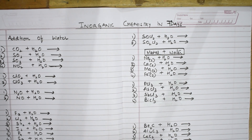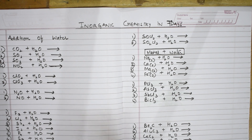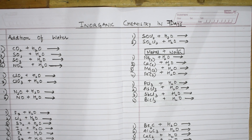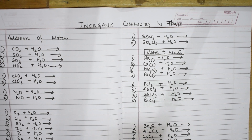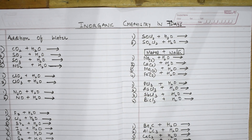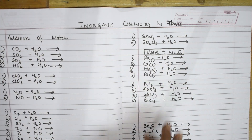In inorganic chemistry, the reactions we have studied are classified into combination reactions, displacement reactions, double displacement reactions, and decomposition reactions. Along with that, we are also going to study disproportionation reactions where both oxidation and reduction occur in the same compound. Most students get confused because there are hundreds of reactions, so I've tried to sort and compile everything.